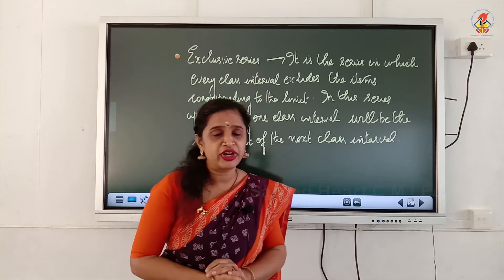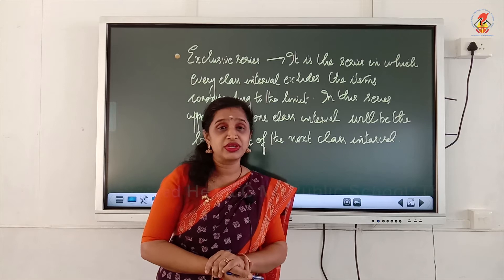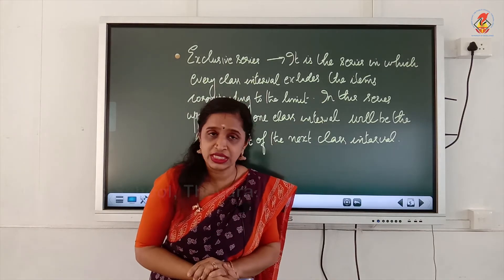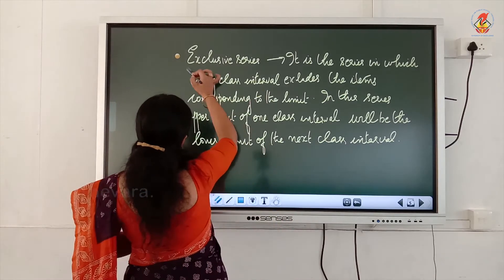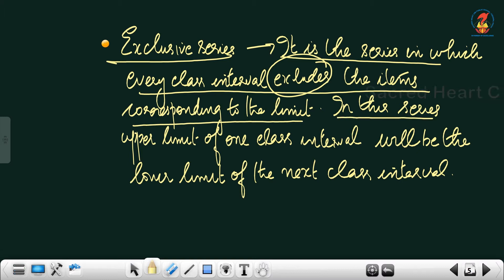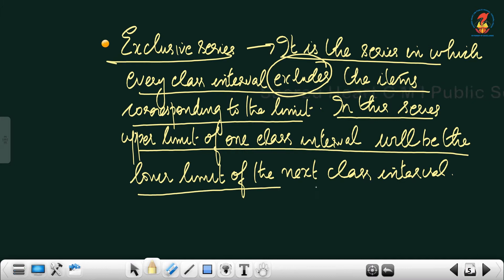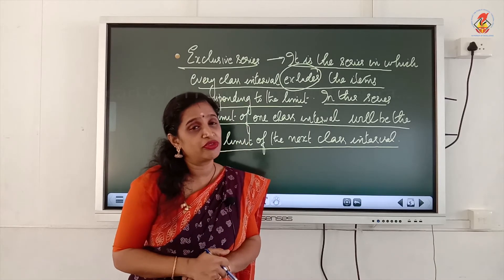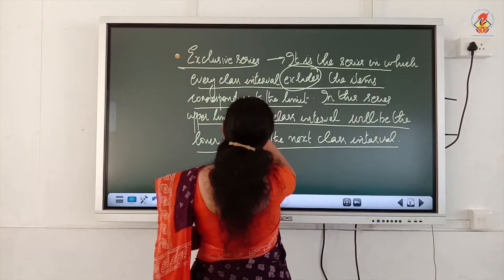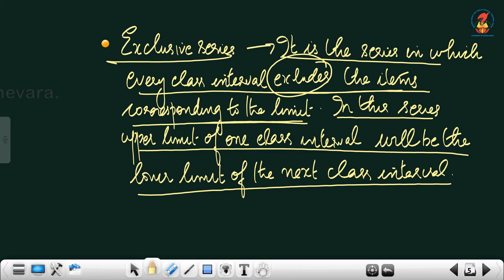Now we move on to the types of continuous series. The first type is exclusive series. An exclusive series is one in which every class interval excludes the items corresponding to the upper limit. Two important points: first, every class interval excludes the item corresponding to its upper limit; second, the upper limit of one class interval will be repeated as the lower limit of the next class interval.